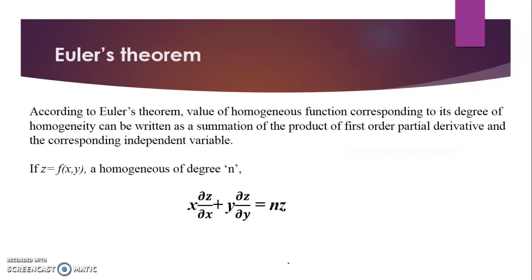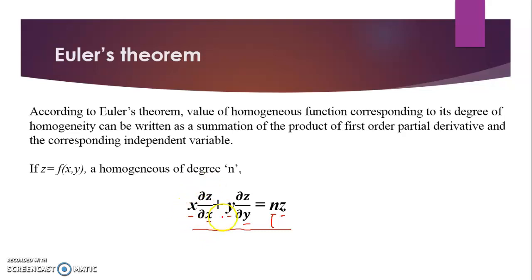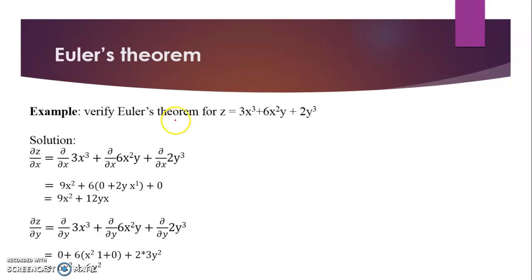Now we will discuss the next very important theorem: Euler's theorem. This is very important from the examination point of view, and also the easiest one, because you just have to memorize a simple formula. In this formula, the first-order partial derivatives are multiplied with their corresponding independent variables — x times ∂z/∂x and y times ∂z/∂y — and when you add them, the result equals n times the original function, where n is the degree of homogeneity.